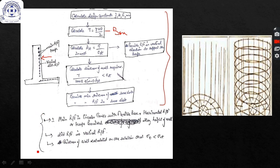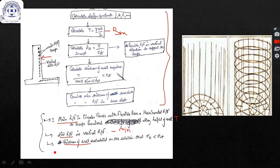Keep in mind the following for each type of tank: what is the main reinforcement, what is the distribution reinforcement, and how is the thickness of wall calculated — these all differ in different cases. In circular tanks with flexible base, the main reinforcement is horizontal hoops calculated from T; vertical reinforcement is minimum distribution steel; thickness is calculated from the tensile stress condition.